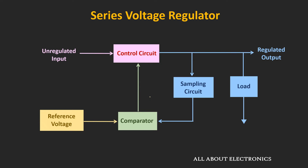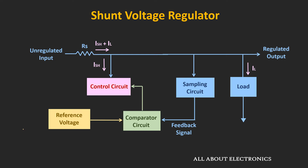In the series voltage regulator, the output voltage is sampled using a sampling circuit and compared with the reference voltage. Based on the error voltage, the control circuit takes corrective action. If the output voltage increases or decreases, the control circuit tries to maintain the output voltage at a fixed level. Similarly, in the shunt regulator, the output voltage is sampled and compared with the reference voltage. If there is any increase in the output voltage, the control circuit shunts away additional current so the voltage drop across series resistor RS increases, maintaining the fixed output voltage.